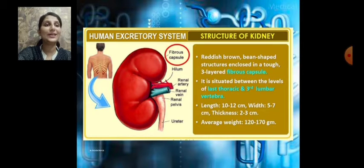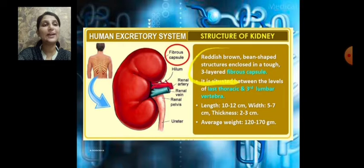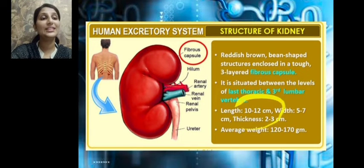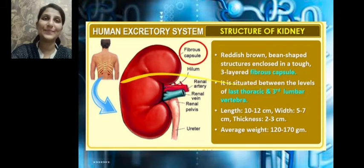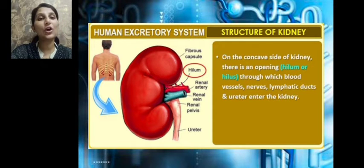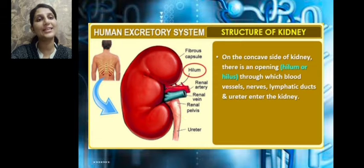Now let's learn about the structure of a kidney. It is reddish-brown in color and bean-shaped. It is enclosed in a tough, three-layered structure called a fibrous capsule. The length of a kidney is about 10 to 12 centimeters, its width is 5 to 7 centimeters, its thickness is 2 to 3 centimeters, and its average weight is about 120 to 170 grams. A kidney has a concave side and a convex side.